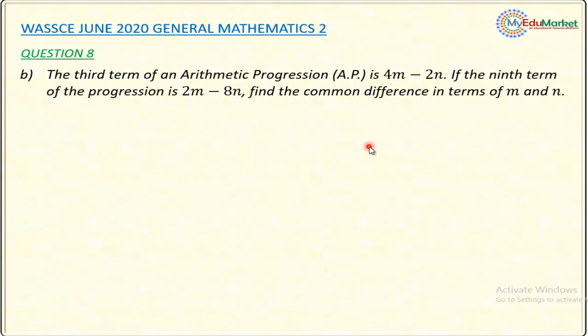So let me attempt to answer this question. If I go back to the question again, it is an AP where the third term is 4M minus 2N and the ninth term, meaning term number 9, is given by 2M minus 8N.